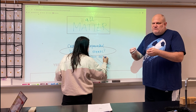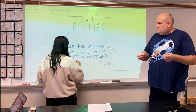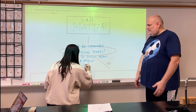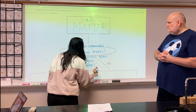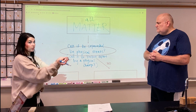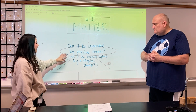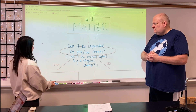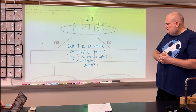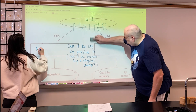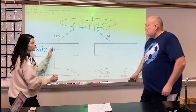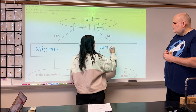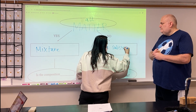We say if the identity of the substance remains the same, you have a physical change. A chemical change is the exact opposite — and that's where we live in chemistry. So when you look at your substance and ask that first question, if the answer is yes, you have what we call a mixture. If the answer is no, then you have what we call a pure substance.